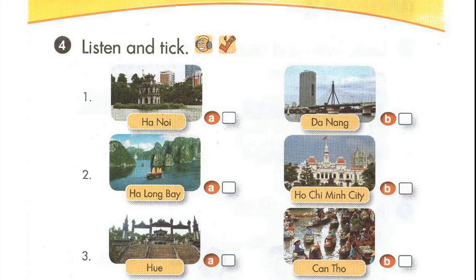Page sixty-five. Lesson one. Activity four. Listen and tick. One. Let's play a city game. OK. Look, this city is in North Vietnam. What's its name?